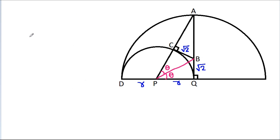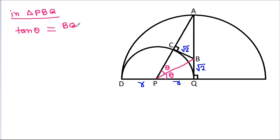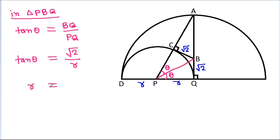In triangle PBQ, tan θ equals BQ divided by PQ. Since BQ is square root of 2 and PQ is r, we get tan θ = √2 / r. Therefore, r = √2 / tan θ.